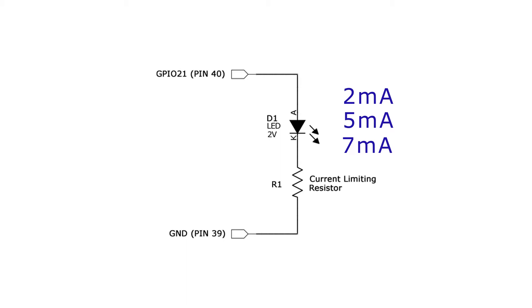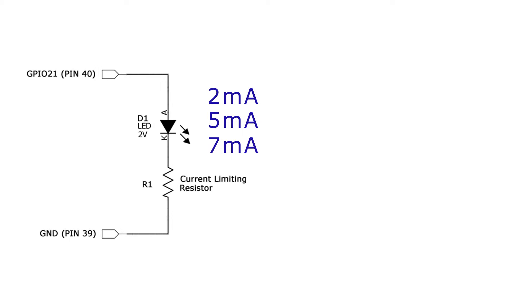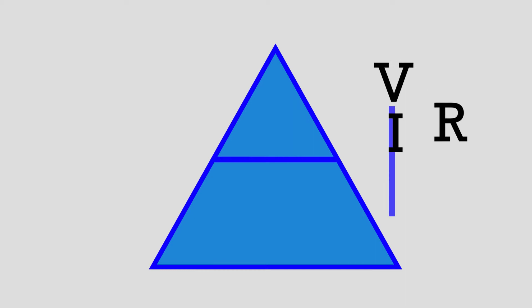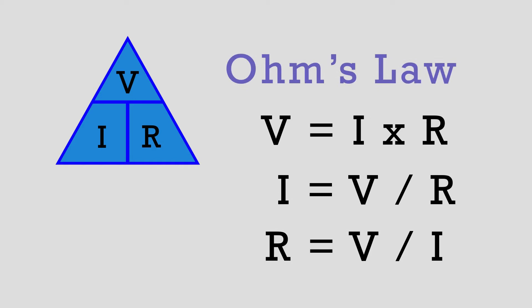To keep this generic for all different Raspberry Pis, we're going to work with 2 milliamps, 5 milliamps, and 7 milliamps. Let's look at how to calculate the resistance values for these three current levels. First, we take the supply voltage from the GPIO pin, which is 3.3 volts, then subtract the 2-volt voltage drop across the LED — called the forward voltage — leaving 1.3 volts. That 1.3 volts will be the voltage drop across resistor R1, so we use Ohm's Law. The formula is R equals V divided by I.